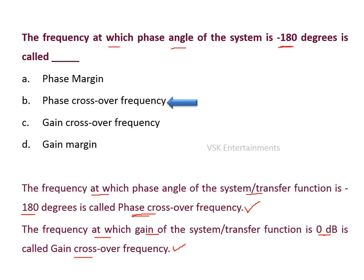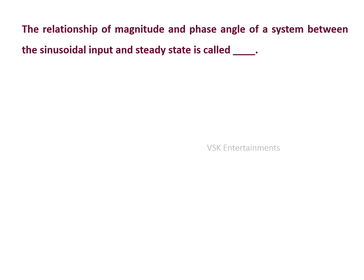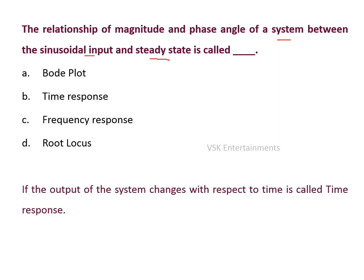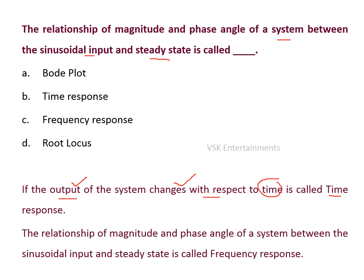Next question: the relationship of magnitude and phase angle of a system between sinusoidal input and steady-state output is called dash. Options are: Bode plot, time response, frequency response, and root locus. If the output changes with respect to time, that is the time response. The relationship of magnitude and phase angle between sinusoidal input and steady-state output is called the frequency response. So option C is the right answer.